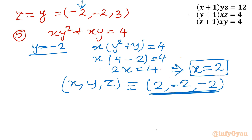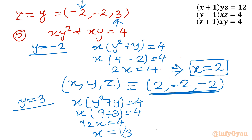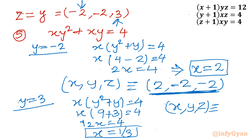Now putting y = 3 into equation 5: x(y² + y) = 4 becomes x(9 + 3) = 4, so 12x = 4, giving x = 1/3. Since z = y = 3, the second solution is (x, y, z) = (1/3, 3, 3).